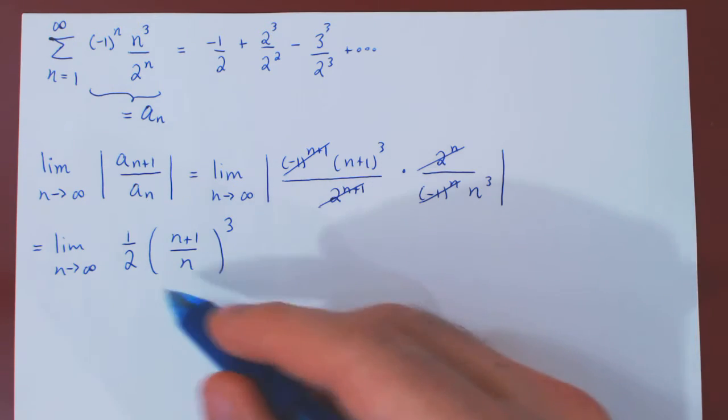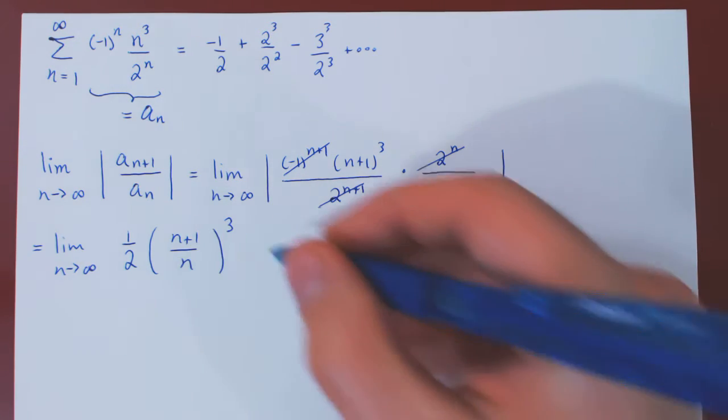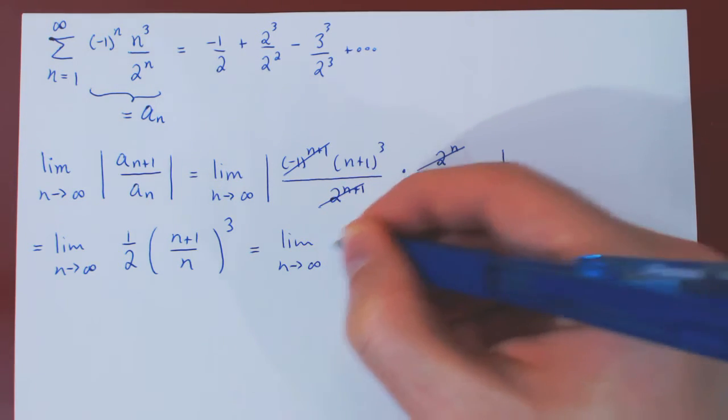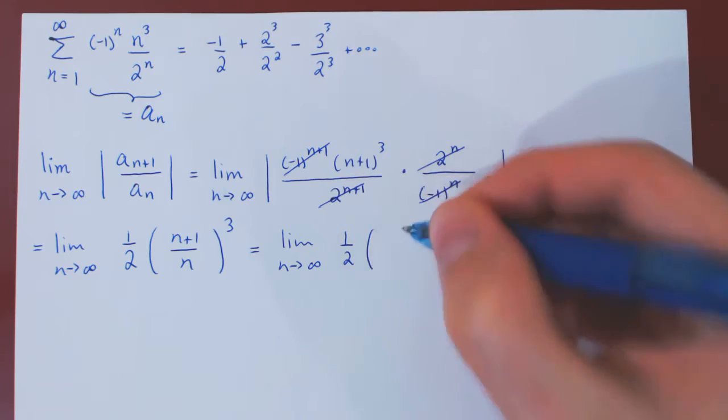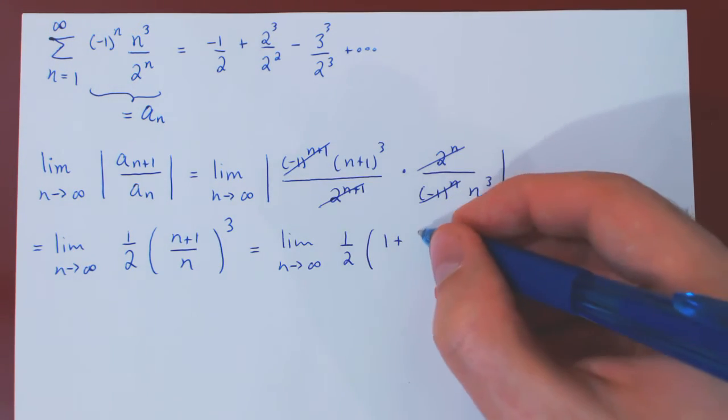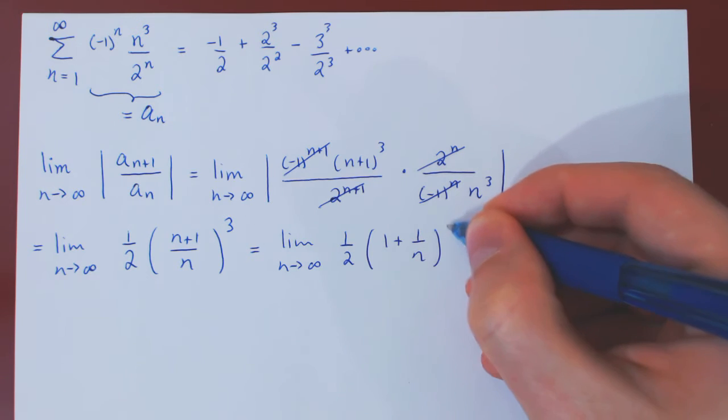The limit will be much simpler if we divide through by n, which gives us now the limit as n tends to infinity of 1/2 times (1 + 1/n)^3.